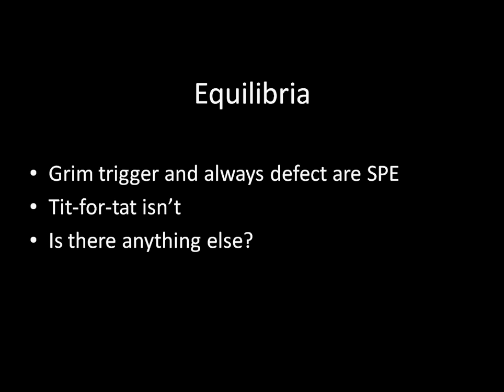Regardless of the discount factors, Always Defect is a subgame perfect equilibrium. And we found out that Tit for Tat is not a subgame perfect equilibrium, at least outside of that one knife-edge condition. A natural question then to ask is whether we're done finding all subgame perfect equilibria — are there any others out there, or is it just Grim Trigger and Always Defect? That's what this lecture is going to address.